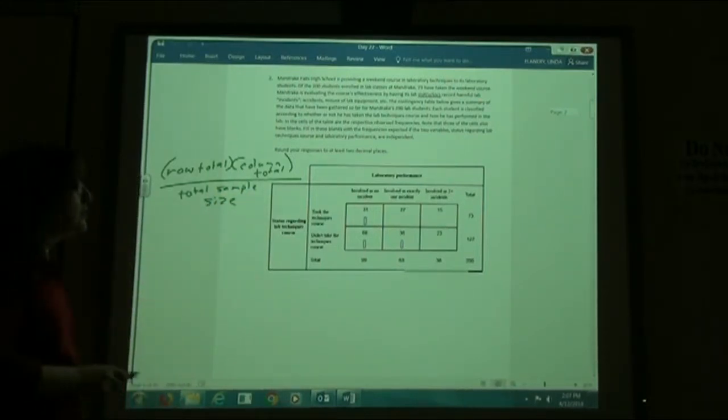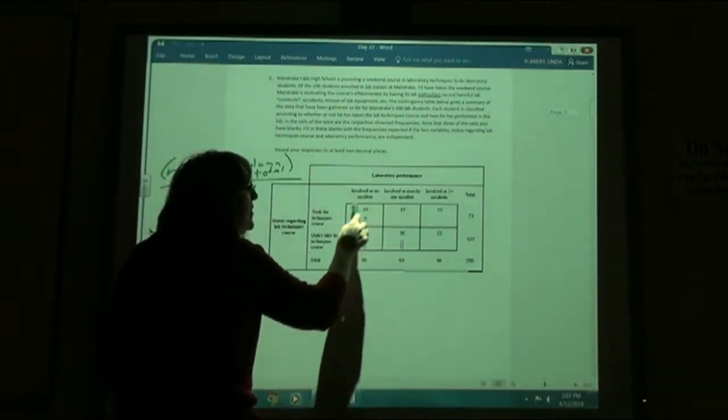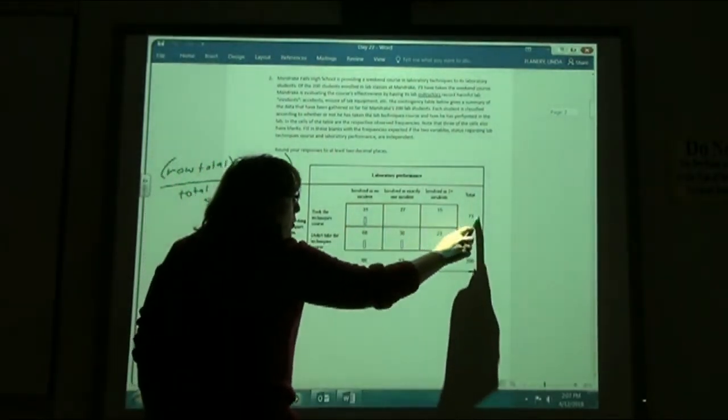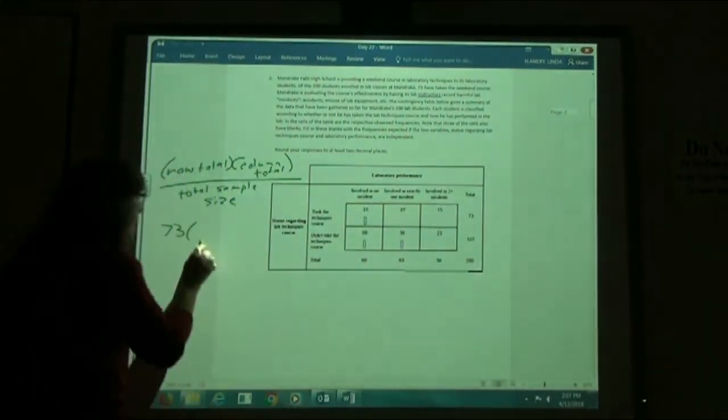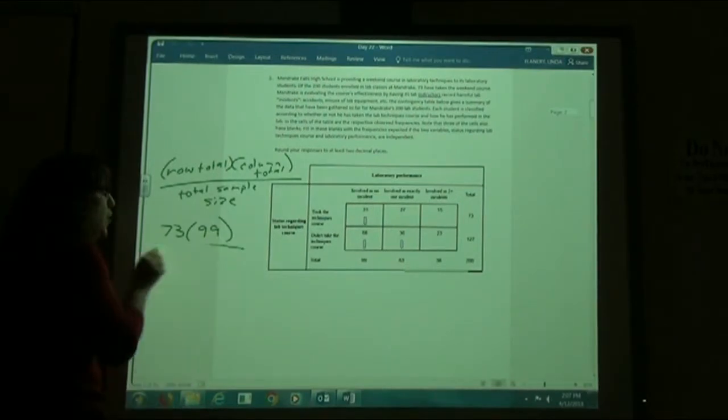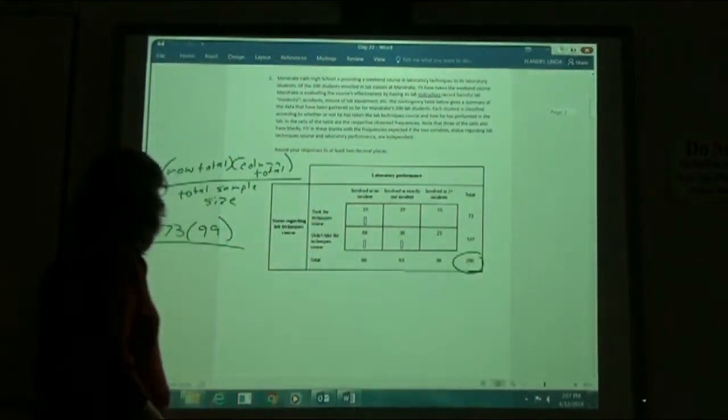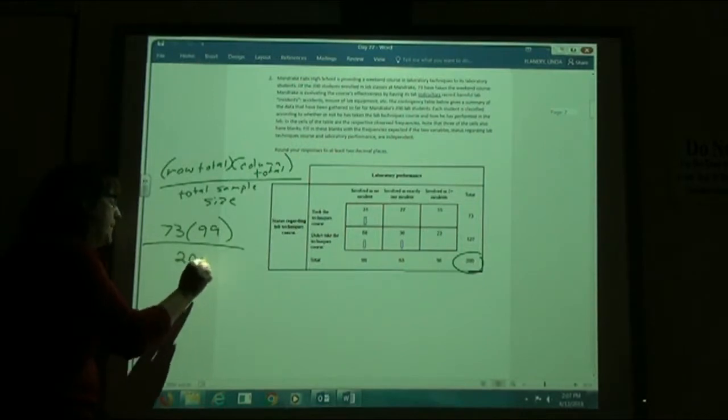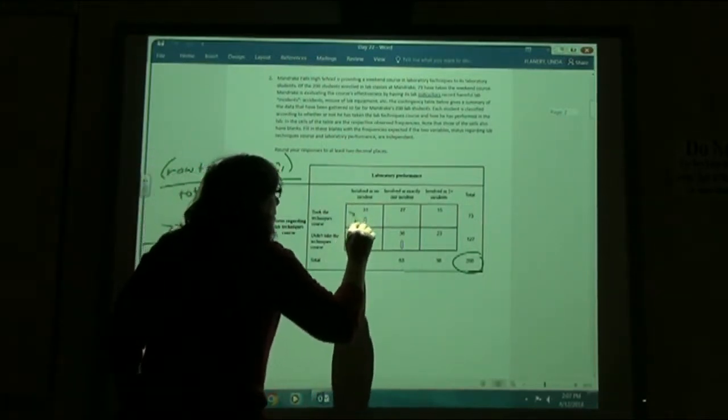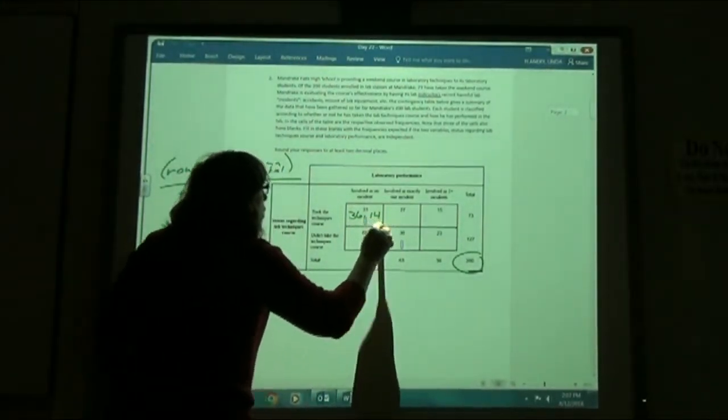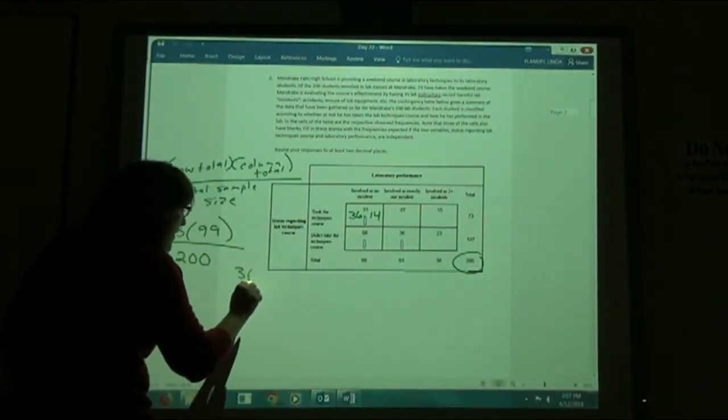So on the first one, the first blank here, I'm filling in this box right here. My row total is 73. My column total would be 99. Total sample size, the 200. Again, just punch that into your calculator. 73 times 99 divided by 200 should give you 36.14.